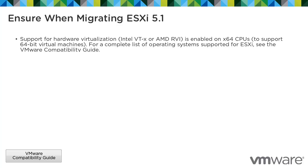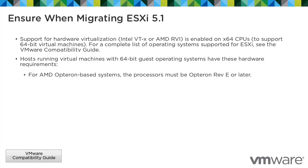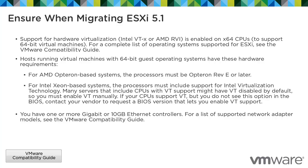Ensure support for hardware virtualization is enabled on x64 CPUs to support 64-bit virtual machines. For a complete list of operating systems supported for ESXi, see the VMware Compatibility Guide. Hosts running virtual machines with 64-bit guest operating systems have the following hardware requirements. Ensure you have one or more Gigabit or 10GB Ethernet controllers. For a list of supported network adapter models, see the VMware Compatibility Guide.